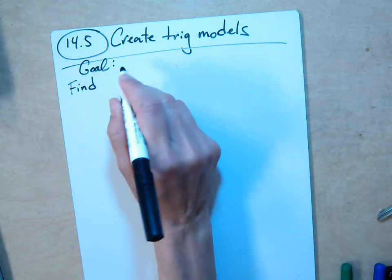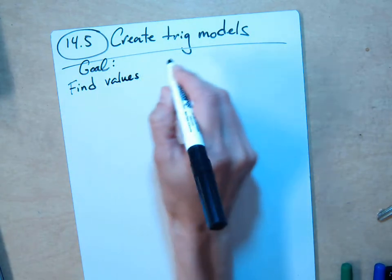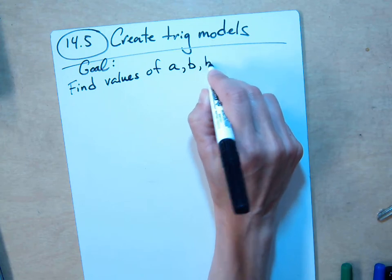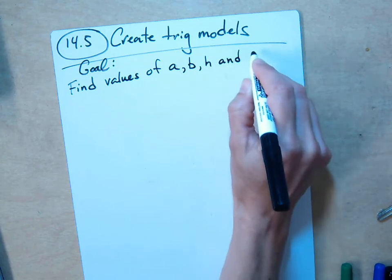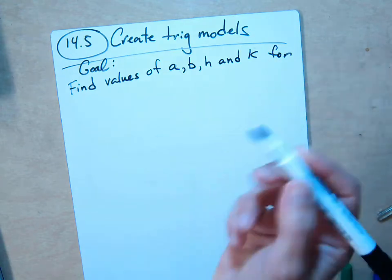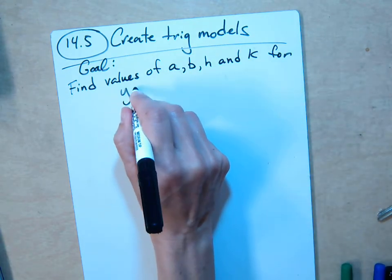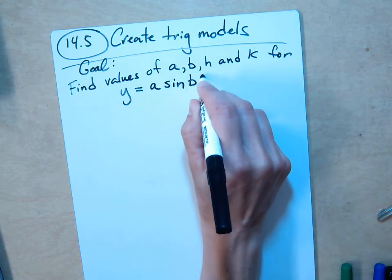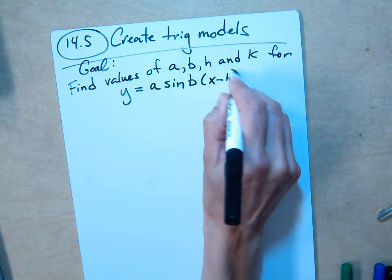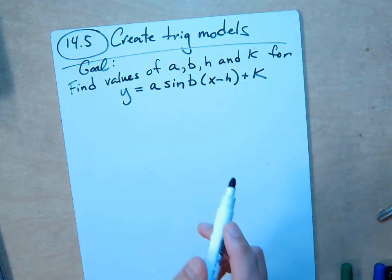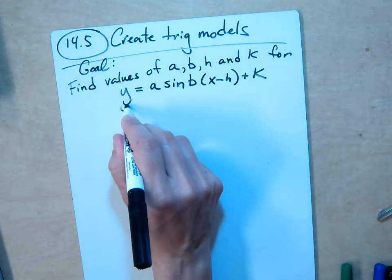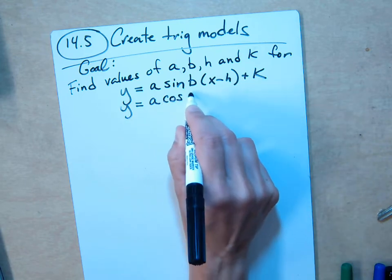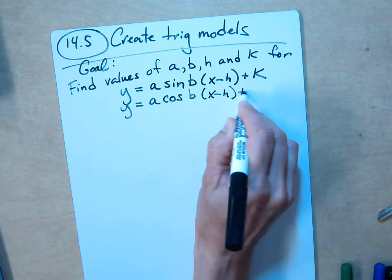In order to make this happen, your goal is to find the values of these constants: a, b, h, and k. You have to find those four things for the equation y equals a sine b times (x minus h) plus k. If you're going to model it with a sine curve, or if you're going to model it with a cosine curve, y equals a cosine b times (x minus h) plus k.